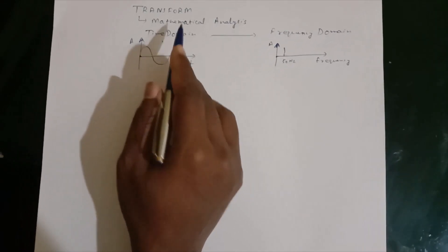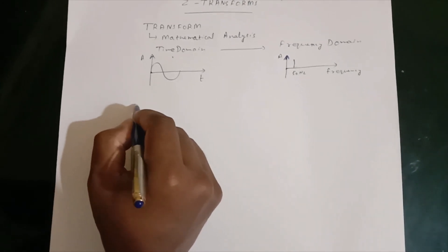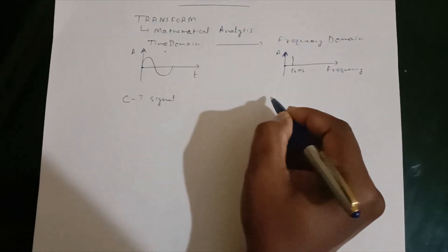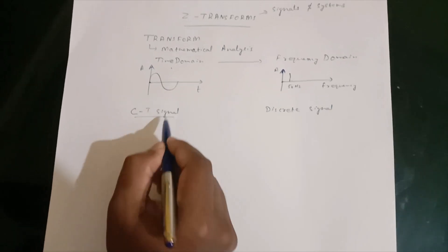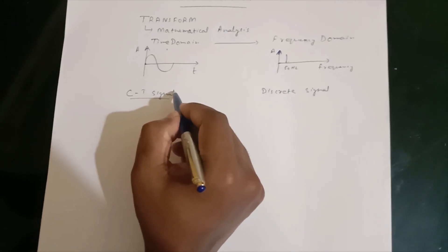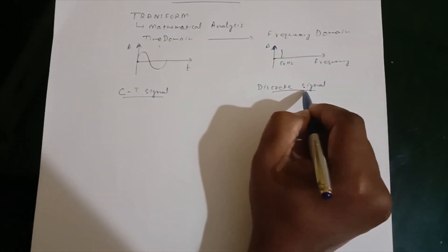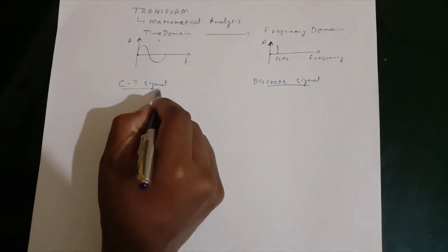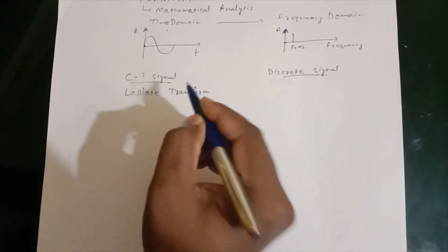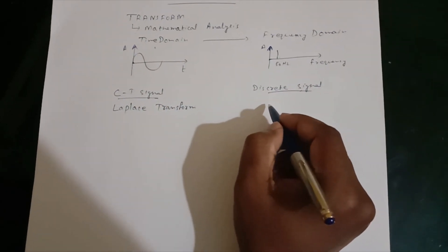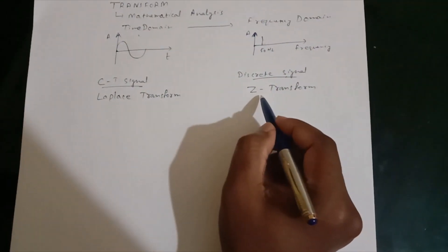Now we have seen the basics of transforms and we go further. There are two types of signals: continuous time signals and discrete time signals. A continuous time signal is a signal which has amplitude for every instance of time. A discrete time signal is a signal which has values only for some discrete values. For a continuous time signal, we use the Laplace transform for converting the signal from time domain to frequency domain, and for a discrete time signal, we use the Z-transform.